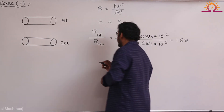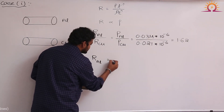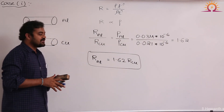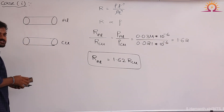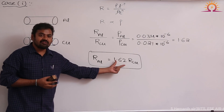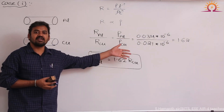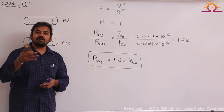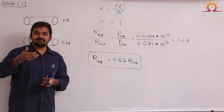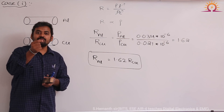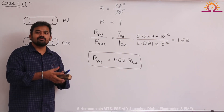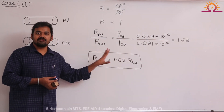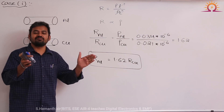Comparing at an average temperature of 75 degrees centigrade — which is the typical full load condition inside a machine — aluminum resistivity is 0.034 × 10⁻⁶ and copper resistivity is 0.021 × 10⁻⁶. This ratio works out to approximately 1.62. Therefore, aluminum conductor resistance is 1.62 times copper conductor resistance. For a given size (same length and cross-sectional area), aluminum winding will offer 62% more resistance than copper. If resistance is more, copper losses will be more; if copper losses are more, temperature will rise more; if temperature rises more, the melting point will be reached very quickly. Therefore, aluminum usage in electrical machines is limited, and copper is the most superior material.